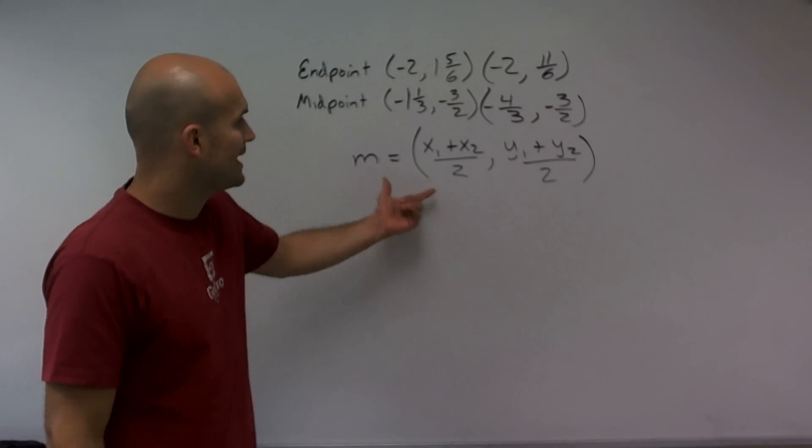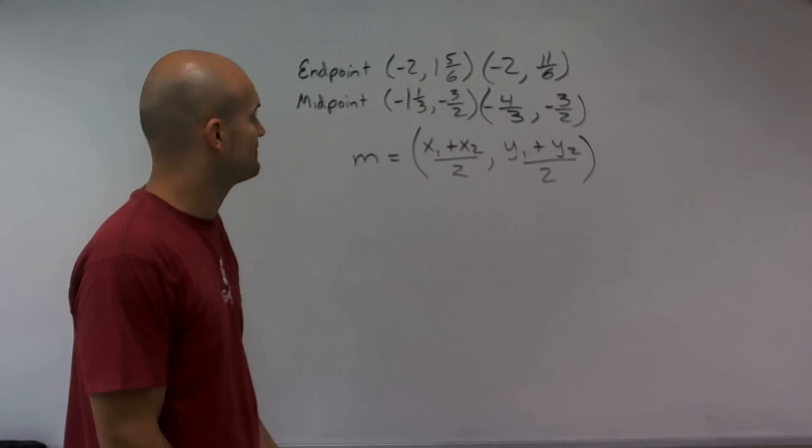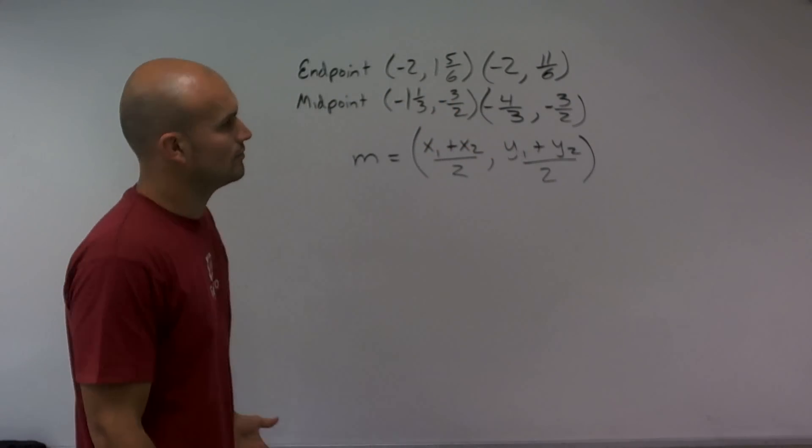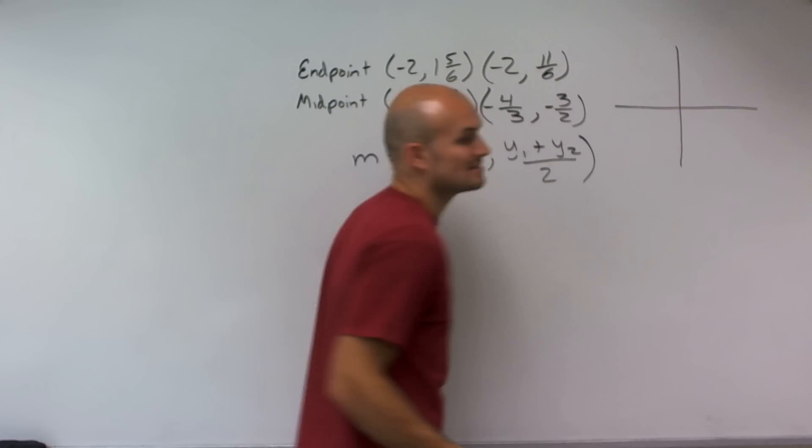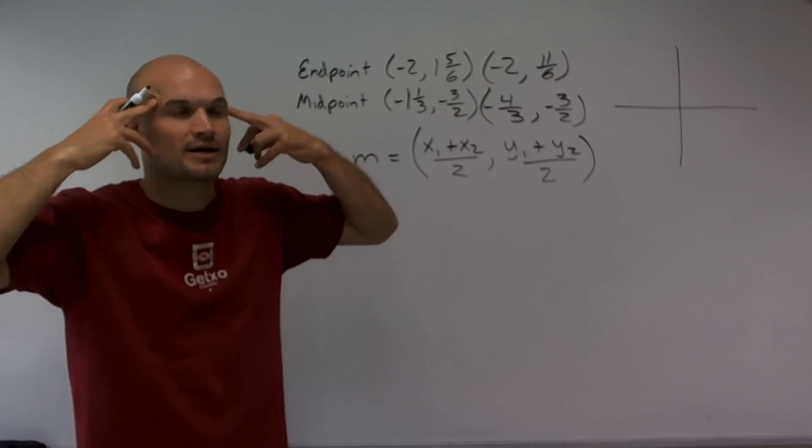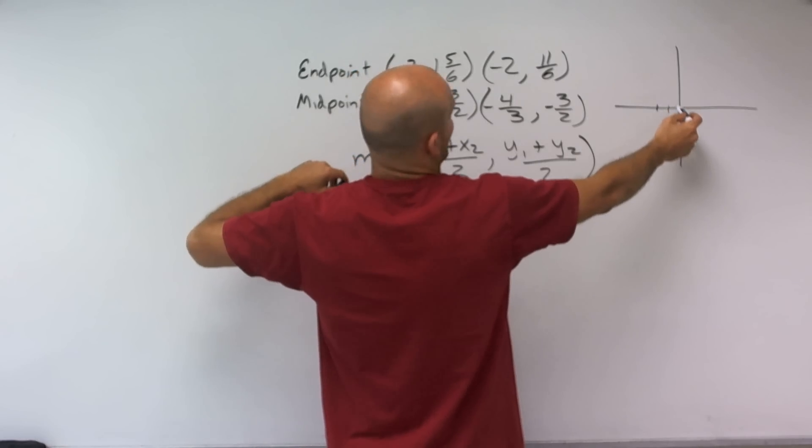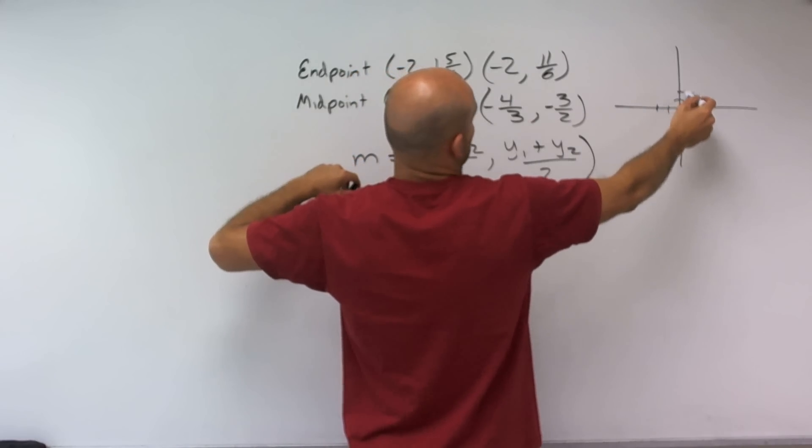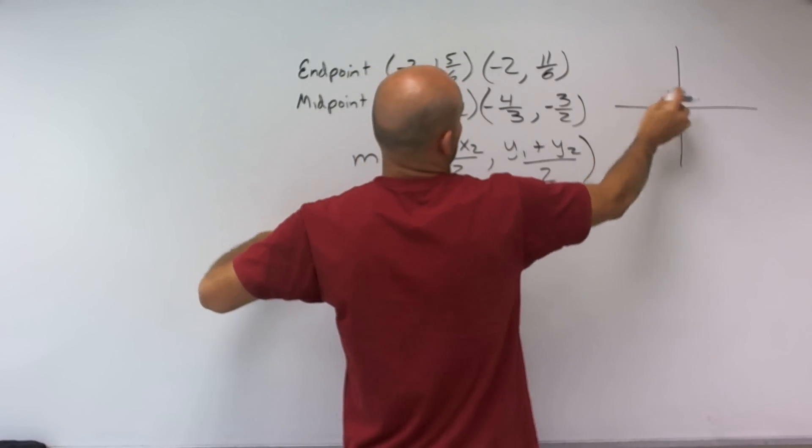So we've got to add those two points up and then divide by 2 to find each coordinate. What we've done, what we've had is we've been given two points. And I also like to draw a picture just so I kind of have a visual understanding of where I'm trying to go. So I plot this point, which is at negative 2, up 1 and 5/6, which is almost at positive 2.